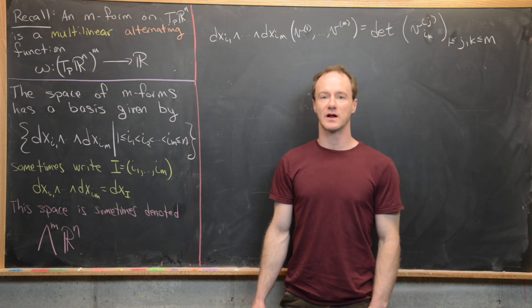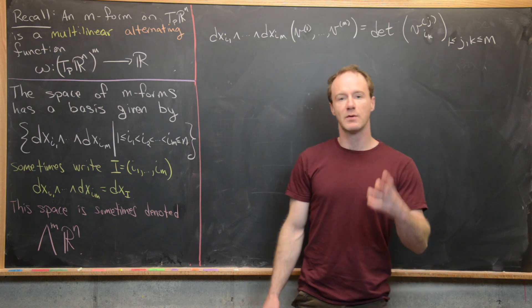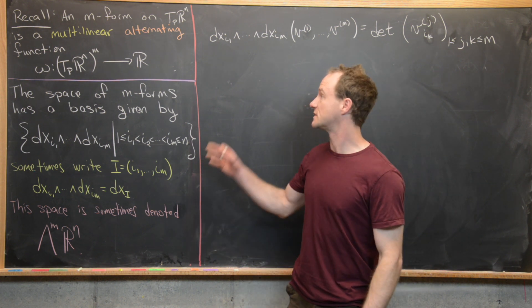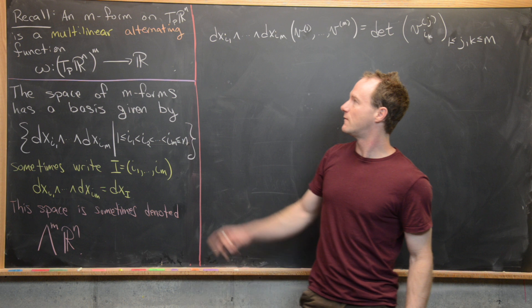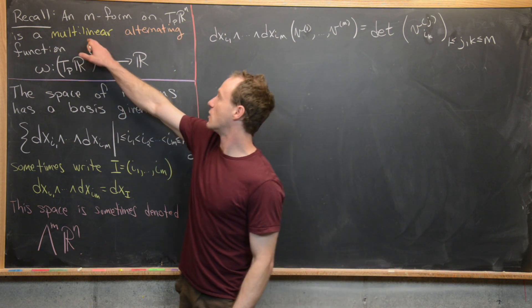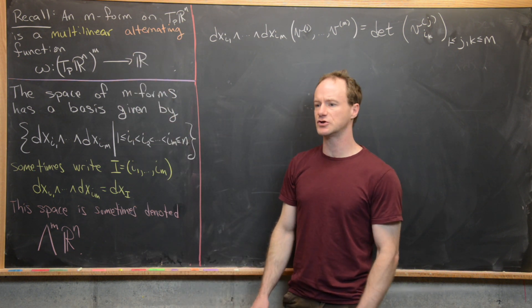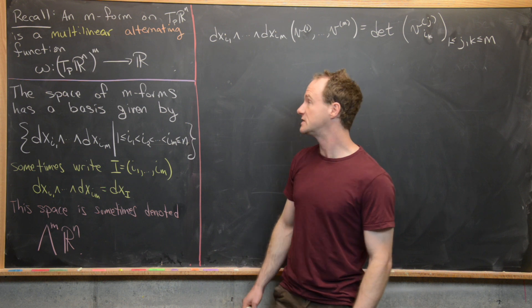Here we're going to prove some algebraic properties of the wedge product of differential forms. But before we do that, I want to recall some stuff. So let's recall that an M form on TPR^N is a function that is both multilinear and alternating. We defined those notions in a previous video, so I'll let you guys check that out if you need to.